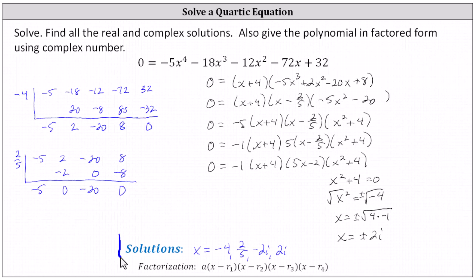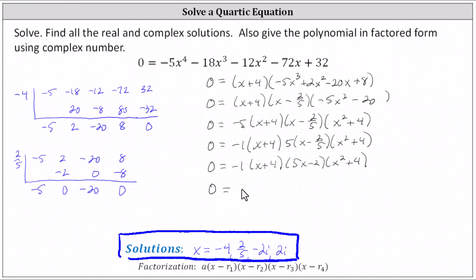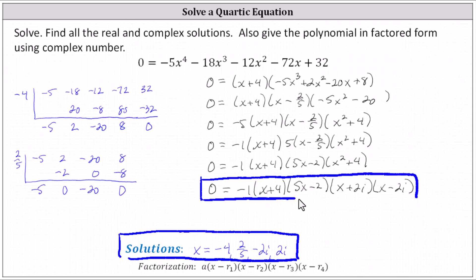So here we have our four solutions. The last line would be the common way to express the factored form over the real numbers, but the directions say to show the factored form using complex numbers, which means we can factor x squared plus four as x minus negative two i, or x plus two i, and x minus two i using complex numbers. So the polynomial in factored form using complex numbers is negative one times the quantity x plus four, times the quantity five x minus two, times the quantity x plus two i, times the quantity x minus two i. And this would be the factored form using just real numbers. I hope you found this helpful.